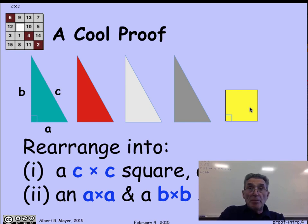Then by the theorem of conservation of paper or conservation of area, it has to be that the c by c area is the same as the a by a plus b by b area. And so a squared plus b squared is equal to c squared.